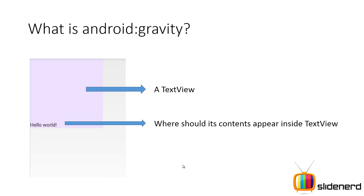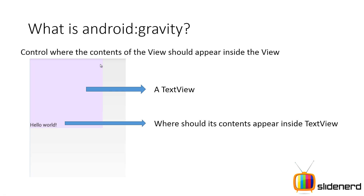So let me go ahead and talk about what gravity exactly is. Now if you guys have this question — what is Android Gravity? As you guys can see, this purple box which you see is my text view. Now remember, it is not using wrap content. I have actually specified a width of 300dp and a height of 300dp. So if you see the content which is 'hello world,' the size of the content is only this much. But inside this whole text view, where will your content be placed? Will it be the center? Will it be over here? Will it be over here? And that is exactly what Android Gravity does — it controls where the content of the view should appear inside the view.